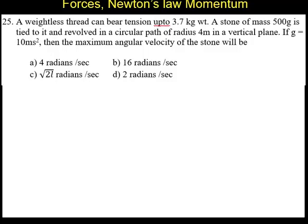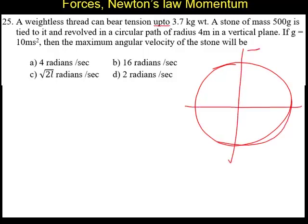So, maximum angular velocity we are supposed to find out. In this case, because the particle is moving in a circular path, we should know where the tension will be maximum. The tension will be maximum at the lowest point. The tension will be minimum at the top point and it will be maximum at the lowest point. So, for this maximum tension, calculate the angular velocity. That is the idea.